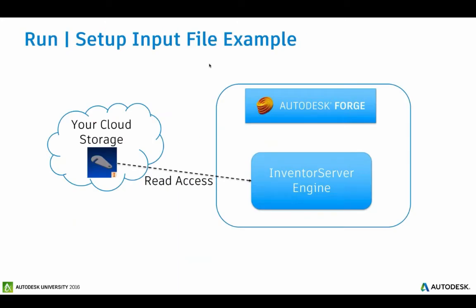To set up an input file: the basic idea of design automation is you have input files up on the cloud, those input files are accessible by our engine, we do the work, and then spit the outputs out. We need to have access to wherever your cloud storage is. We'll support any kind of cloud storage as long as we have access, typically through a signed URL, or you could do that within our Forge data management as well.